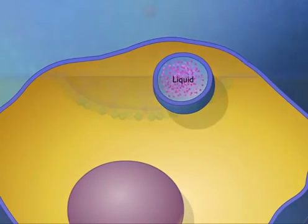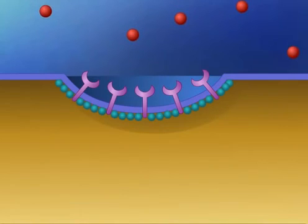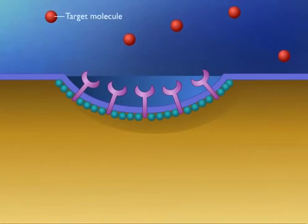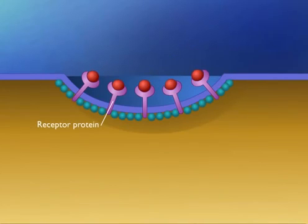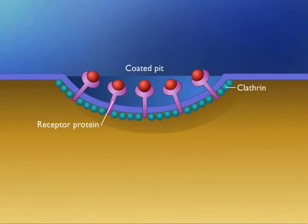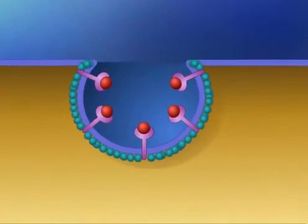Specific molecules such as low-density lipoproteins (LDL) are often transported into eukaryotic cells through receptor-mediated endocytosis. Molecules to be transported first bind to specific receptors on the plasma membrane. The interior portion of the receptor protein is embedded in the membrane. The protein clathrin coats the inside of the membrane in the area of the pit. When an appropriate collection of molecules gathers in the coated pit, the pit deepens and seals off to form a coated vesicle, which carries the molecules into the cell.